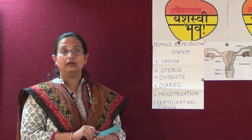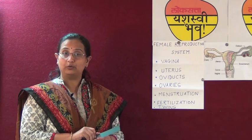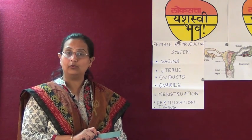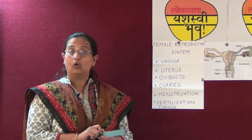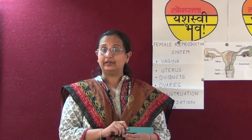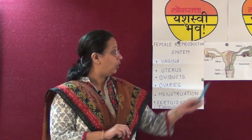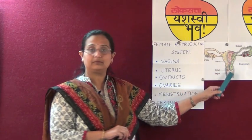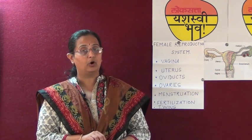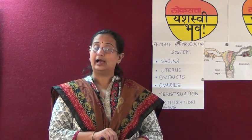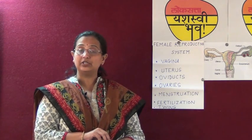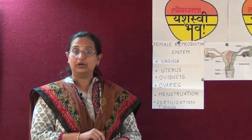Oviducts are the fallopian tubes which carry the eggs that are released from the ovaries. Ovaries are the almond-shaped bodies placed to the right and left of the uterus. These ovaries secrete the hormones progesterone and estrogen, which bring about changes in females during puberty.